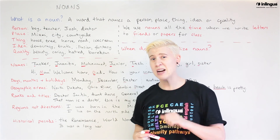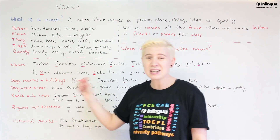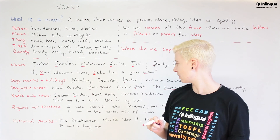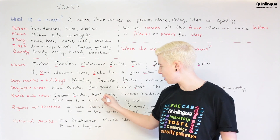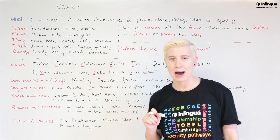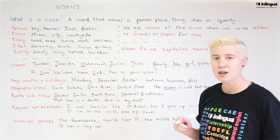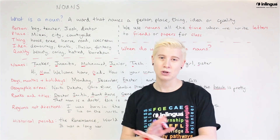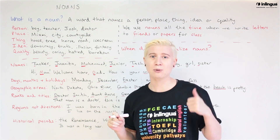For example, Dr. Smith — my doctor. This is acting as part of his name; it is his title, one specific person. Aunt Anne — same situation, one specific person — so we need those capital letters. General Bradshaw: she's a general in the army. 'She's a general' — no capital. 'She is General Bradshaw' — capital, capital.